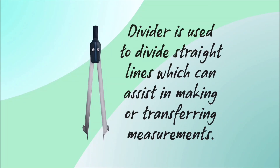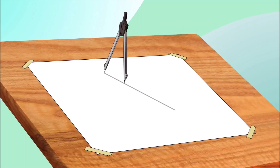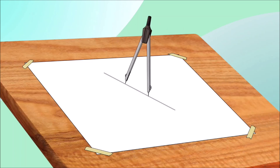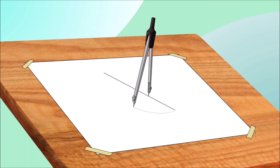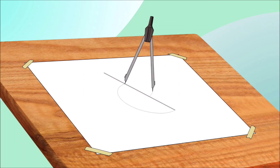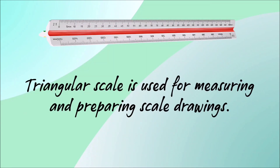Divider is used to divide straight lines, which can assist in making or transferring measurements. Triangular scale is used for measuring and preparing scale drawings.